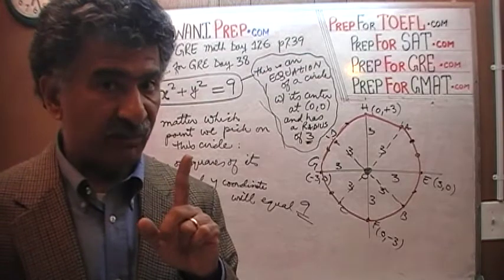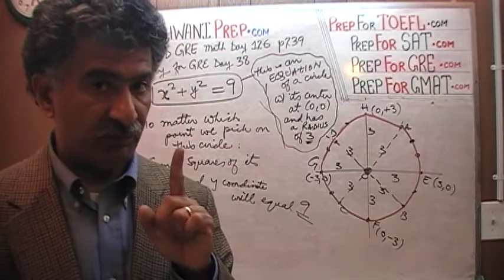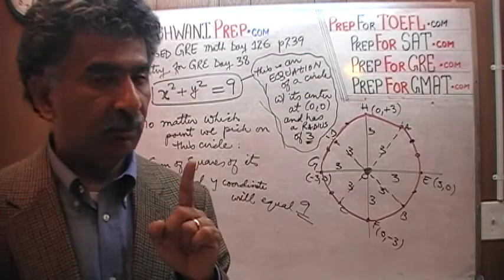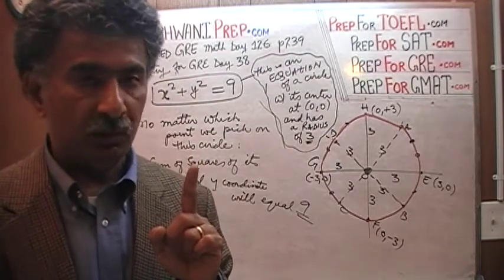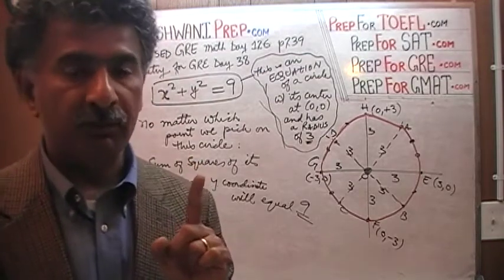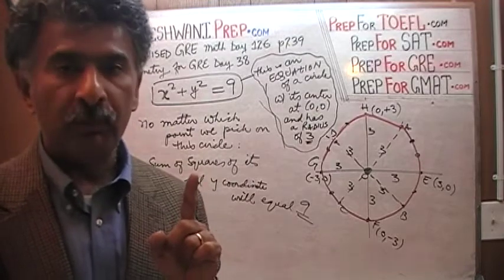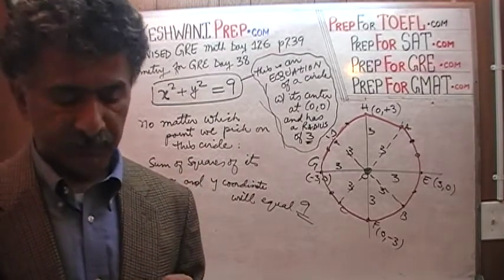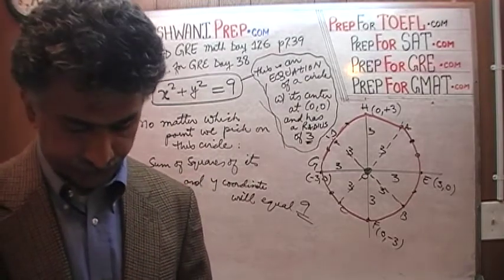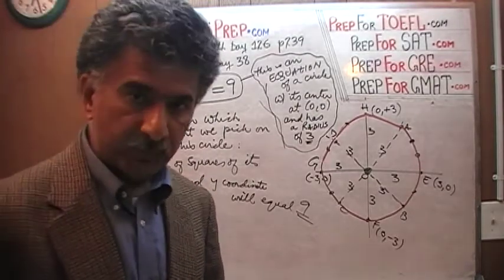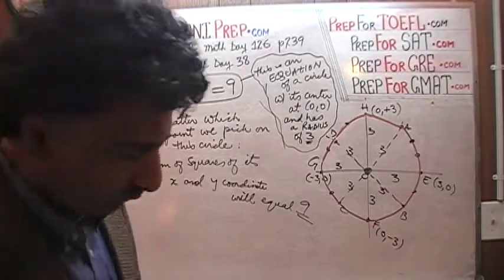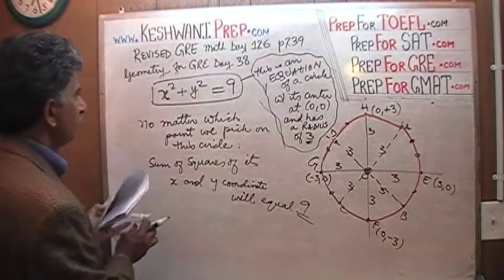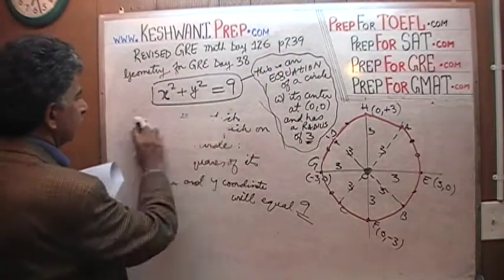Now the plot is going to thicken soon, because circles do not always sit at the origin — they move around. We'll talk about that when the time comes. But before we do that, let's look at a few more circles.